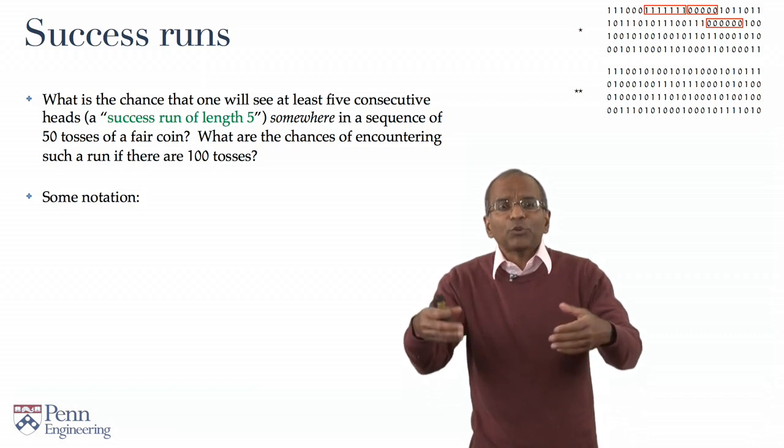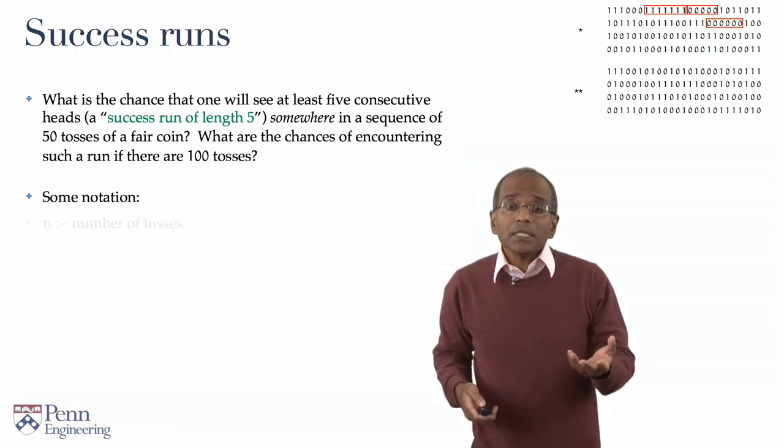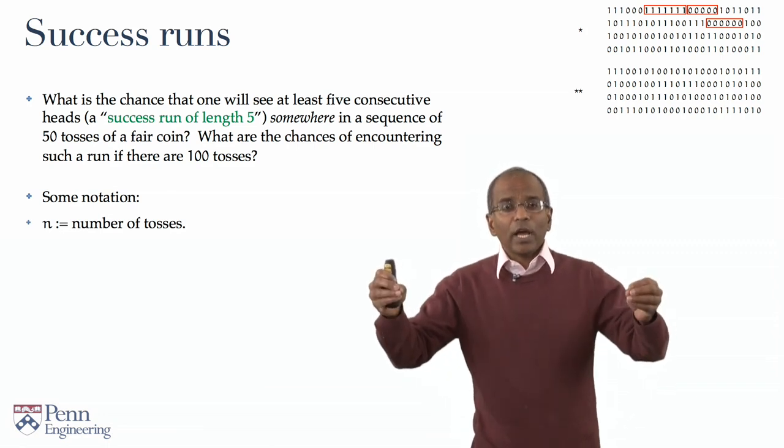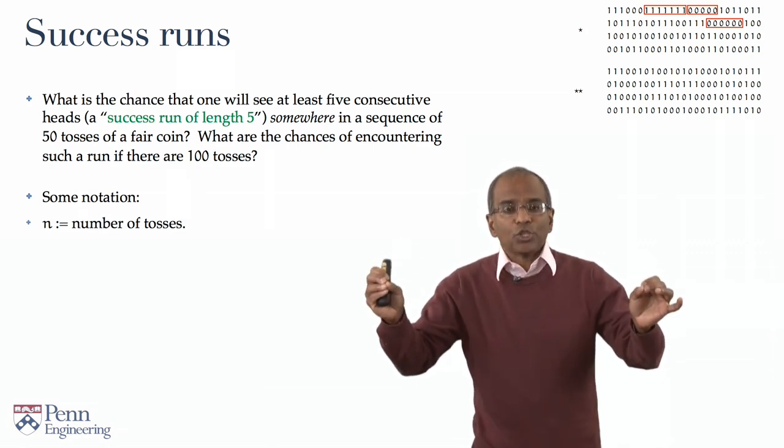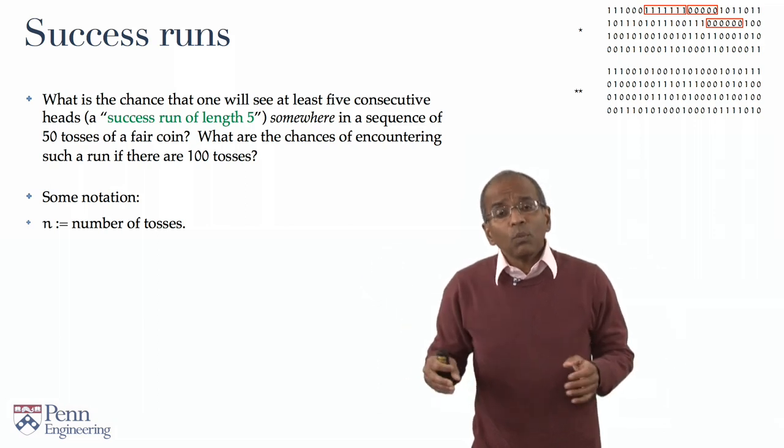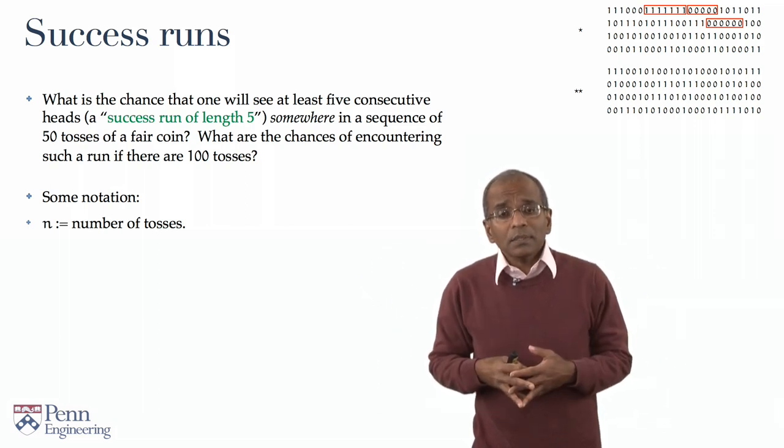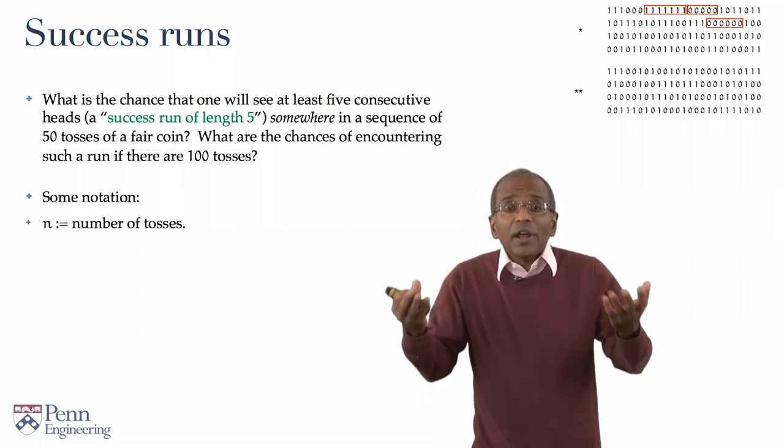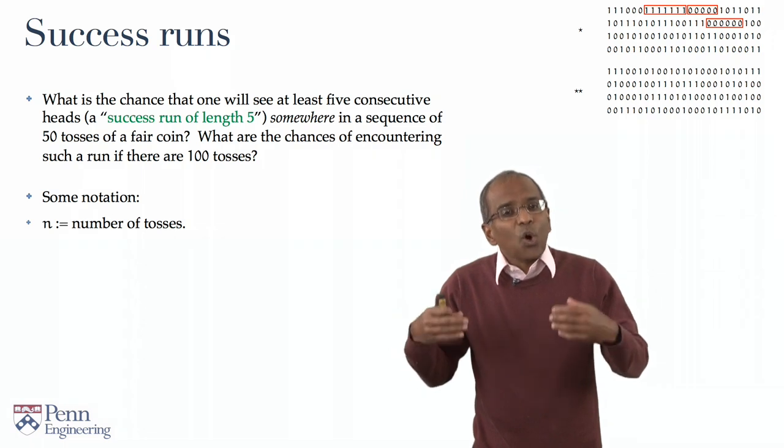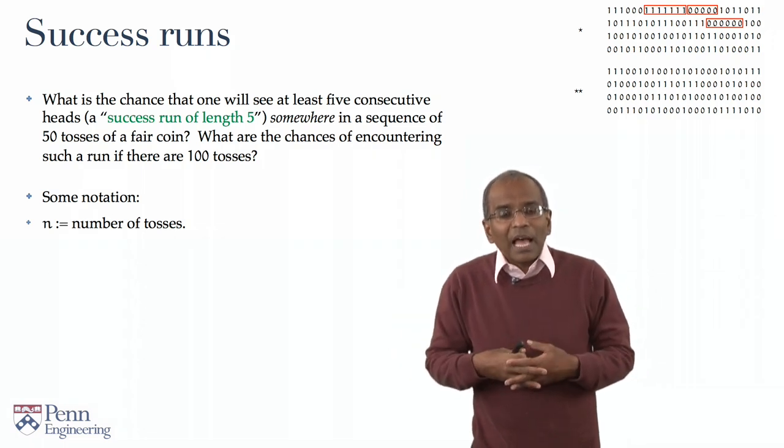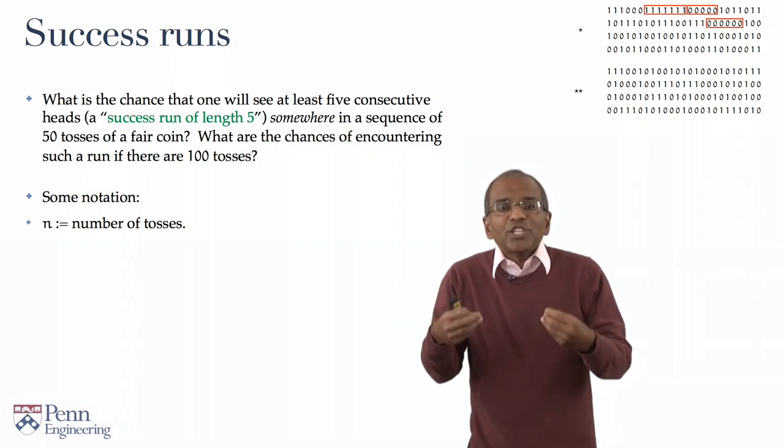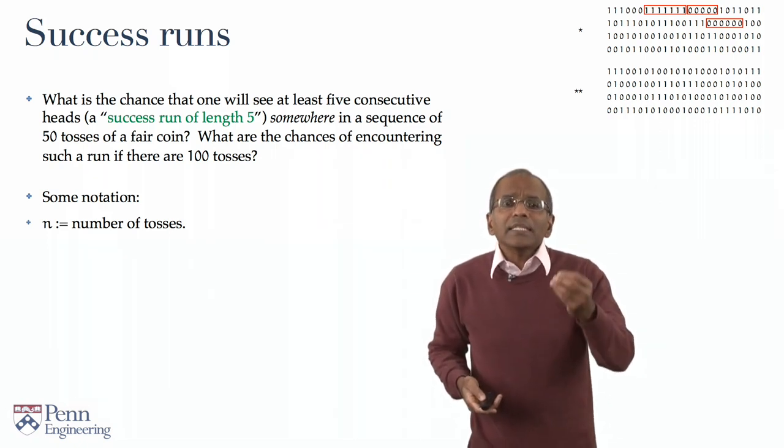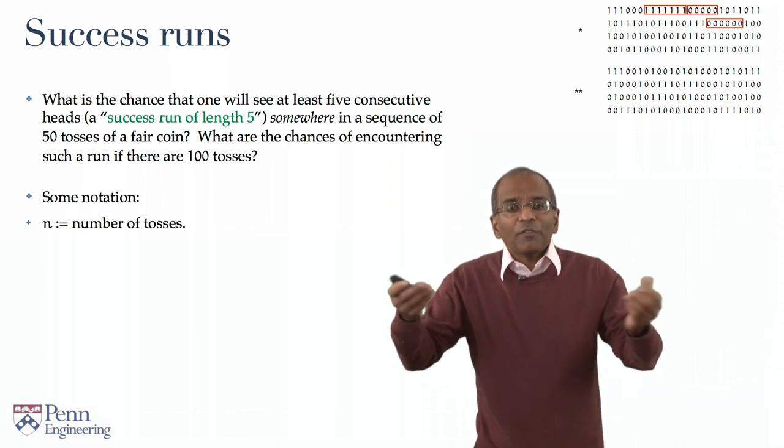What are the variables that you could play with in such an experiment? First, the number of tosses of the coin. Let us say we are interested in n tosses of the coin. Why n, you ask? Well, because it is inconceivable we call a generic integer anything else. Long tradition and custom have inured us to calling a general integer or a variable n. So, accordingly, let n be the number of tosses of interest.